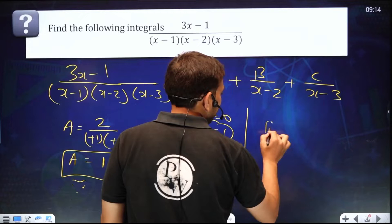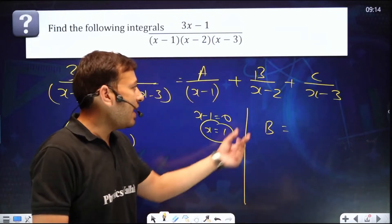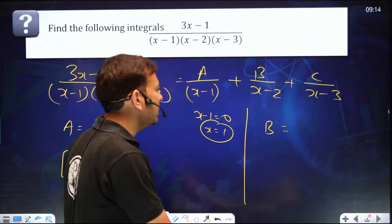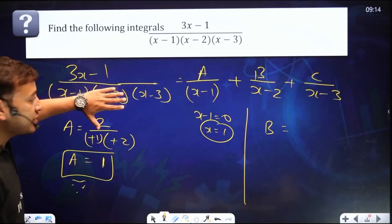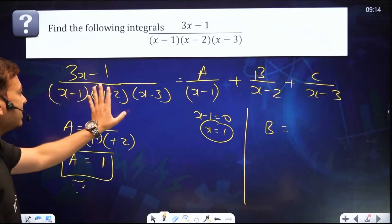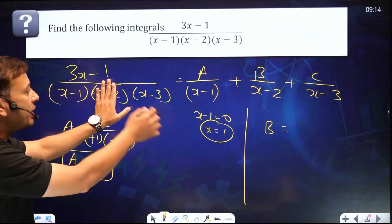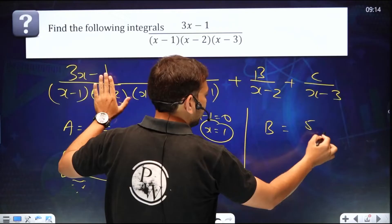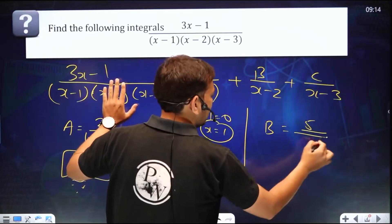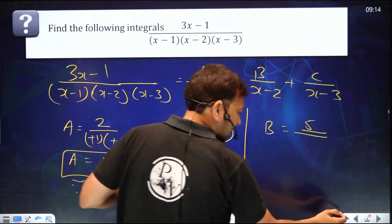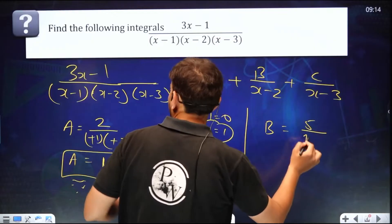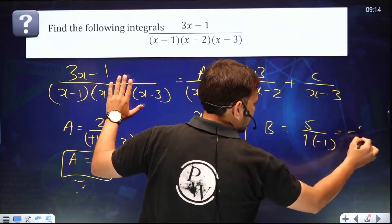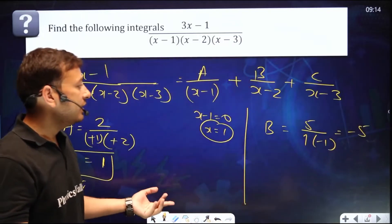Now for B: put x−2 = 0, so x = 2. Hide (x−2) and substitute x = 2 in the remaining part. So B = (3×2 − 1) / [(2−1)(2−3)] = 5 / [(1)(−1)] = −5. The answer for B is −5.